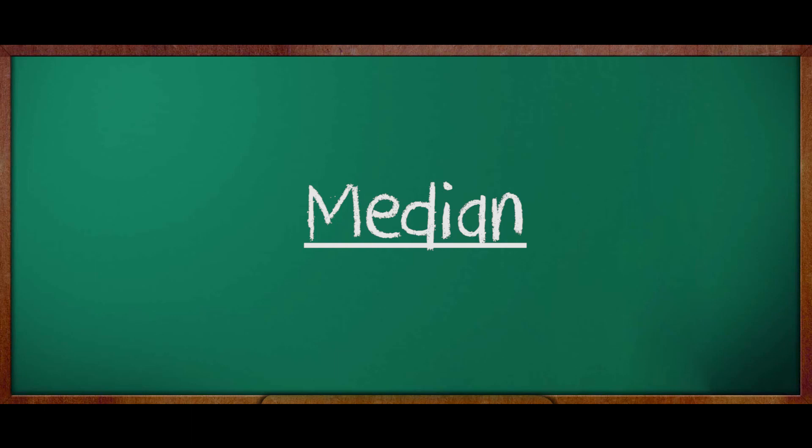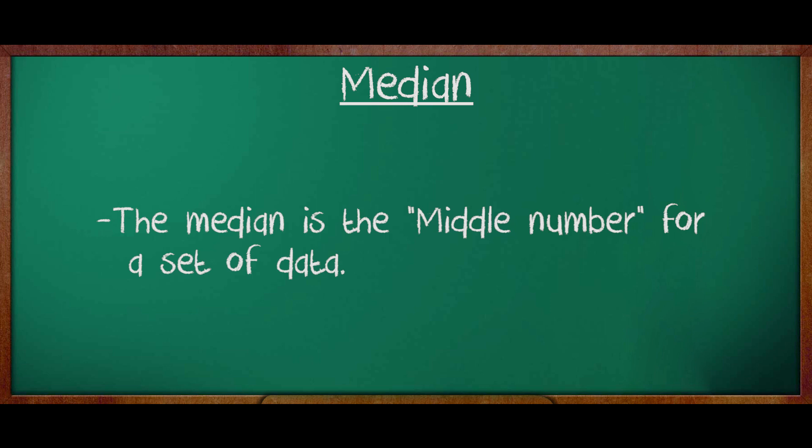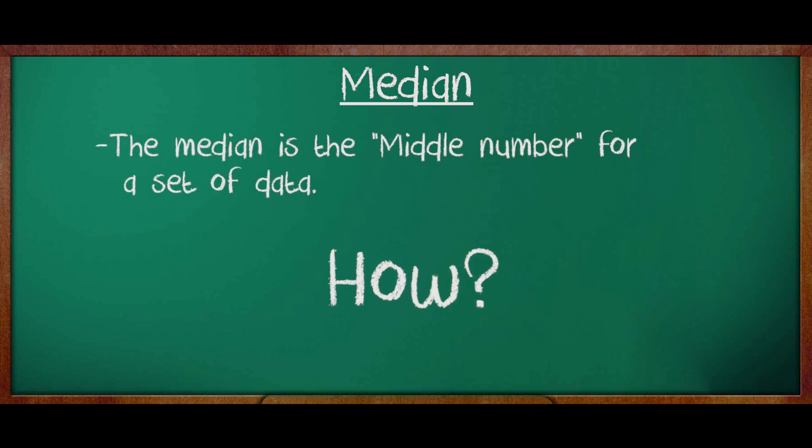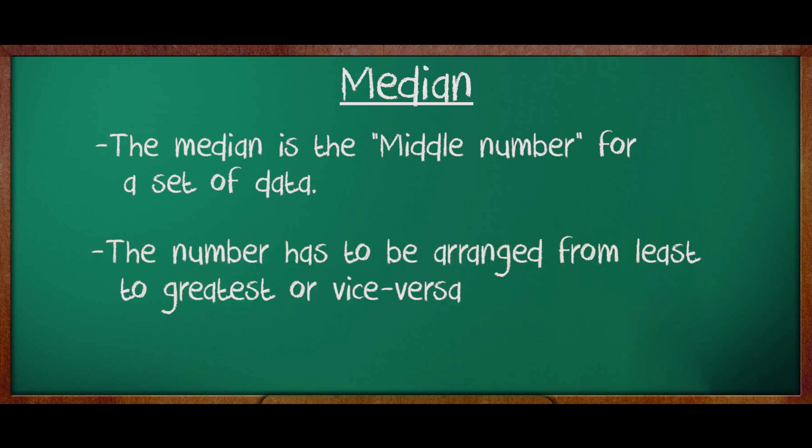Now, let us look at median. What is median? The median is the middle number for a set of data. How do we find the median? The numbers have to be arranged from least to greatest or vice versa. Then, look for the middle number. That middle number is the median for that particular set of data.